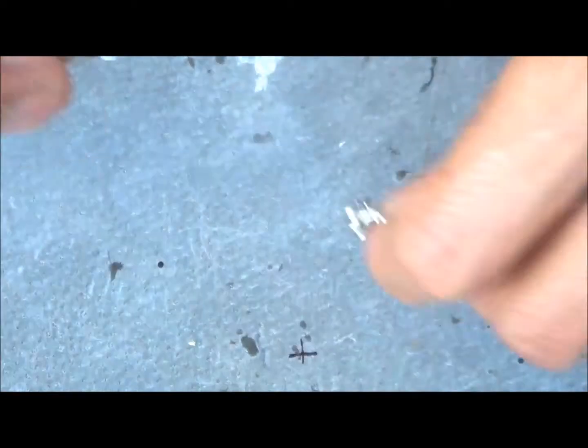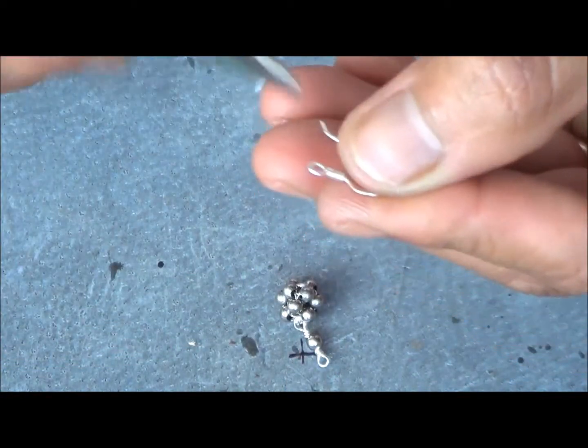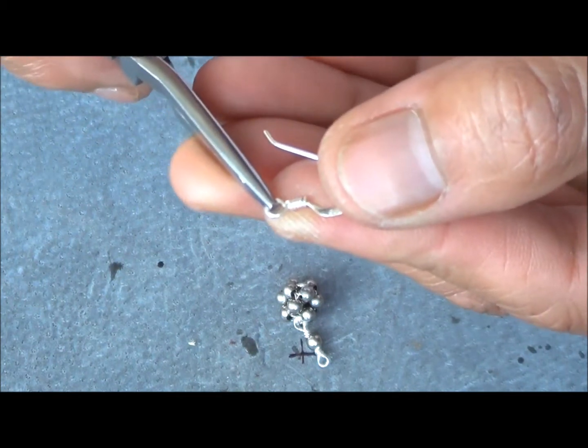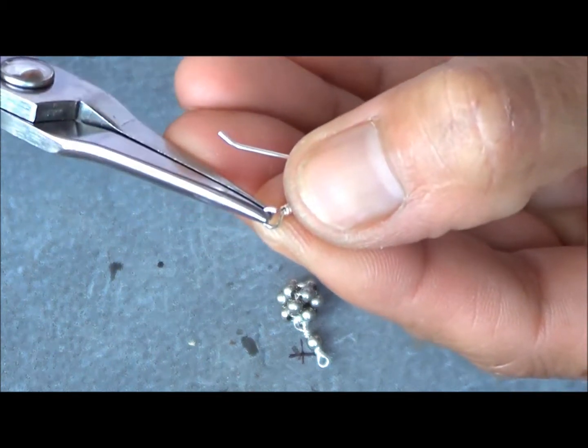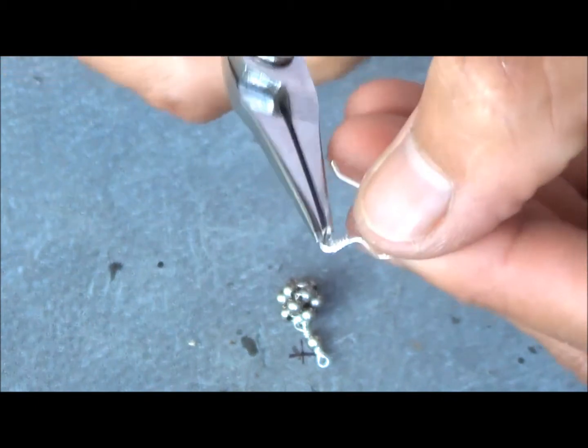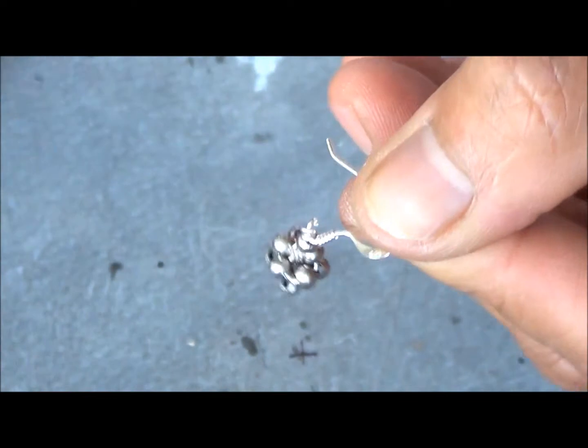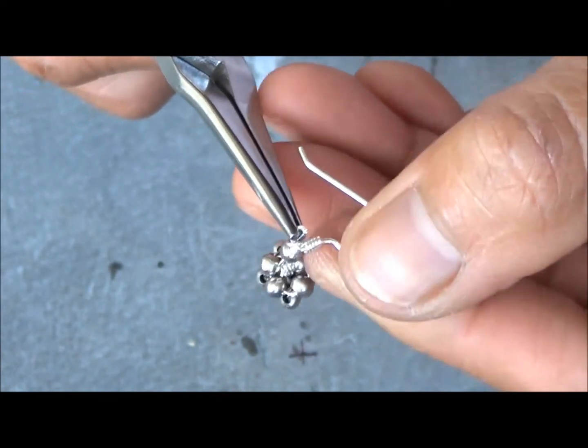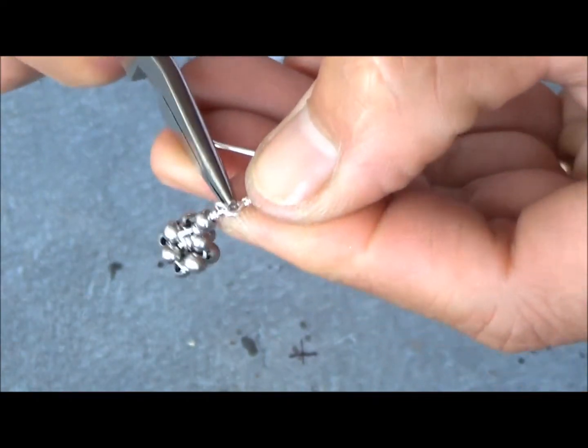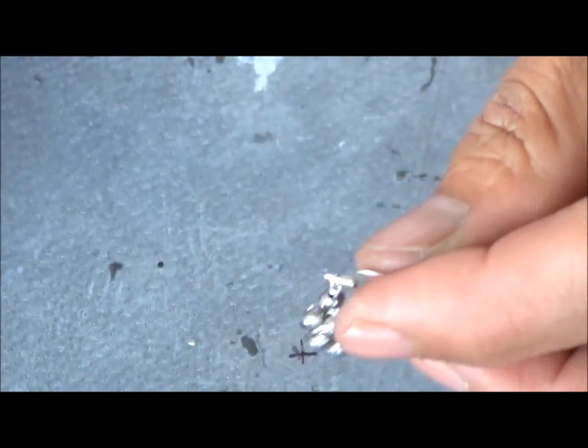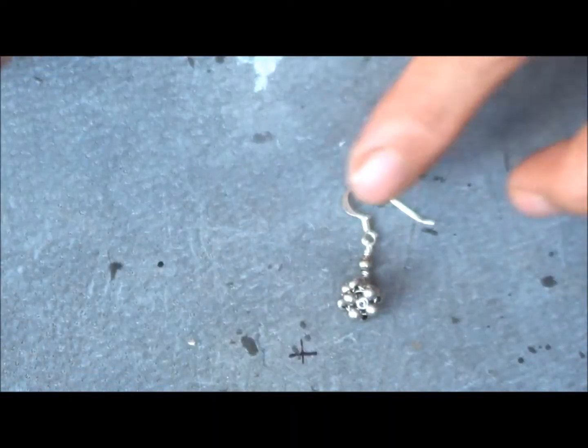Then we'll take our ear hook and just flick that on the side. Open up the loop, hook up the other end, and close it off.